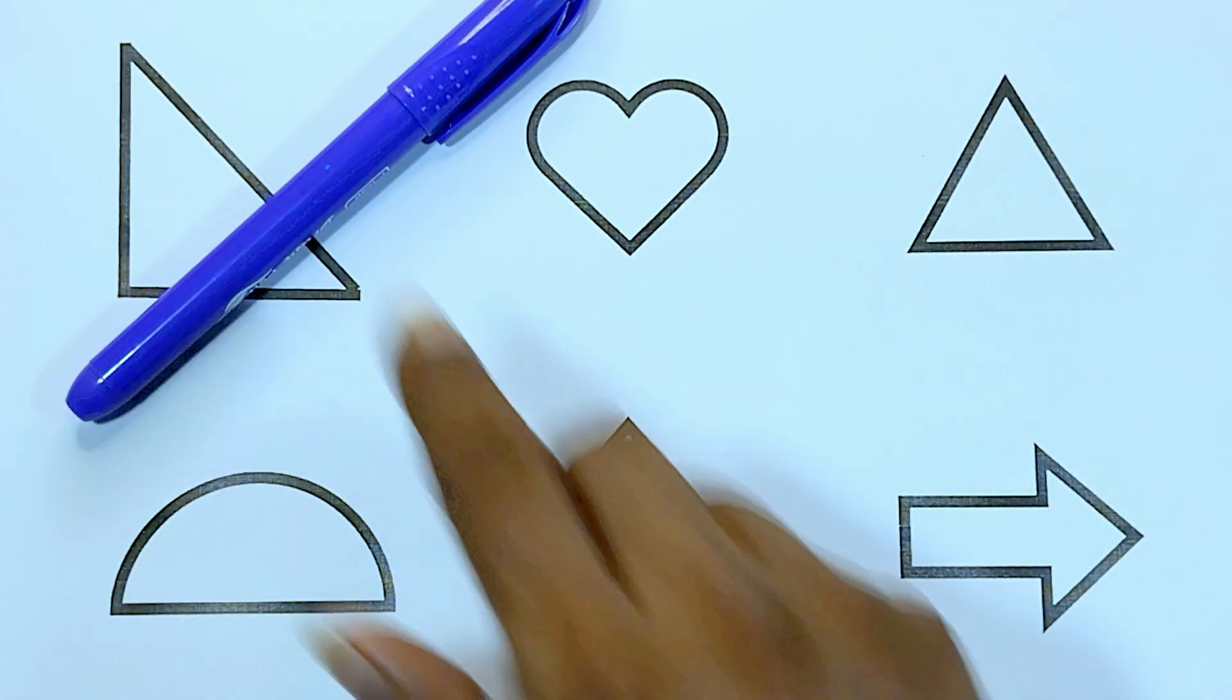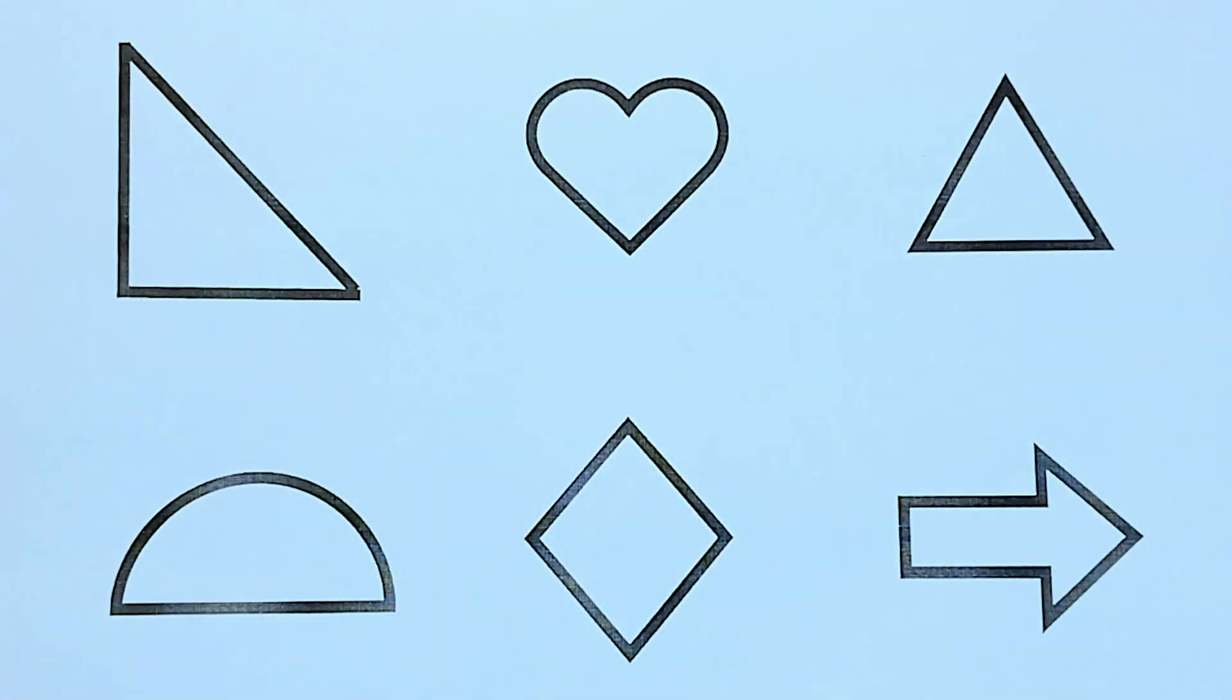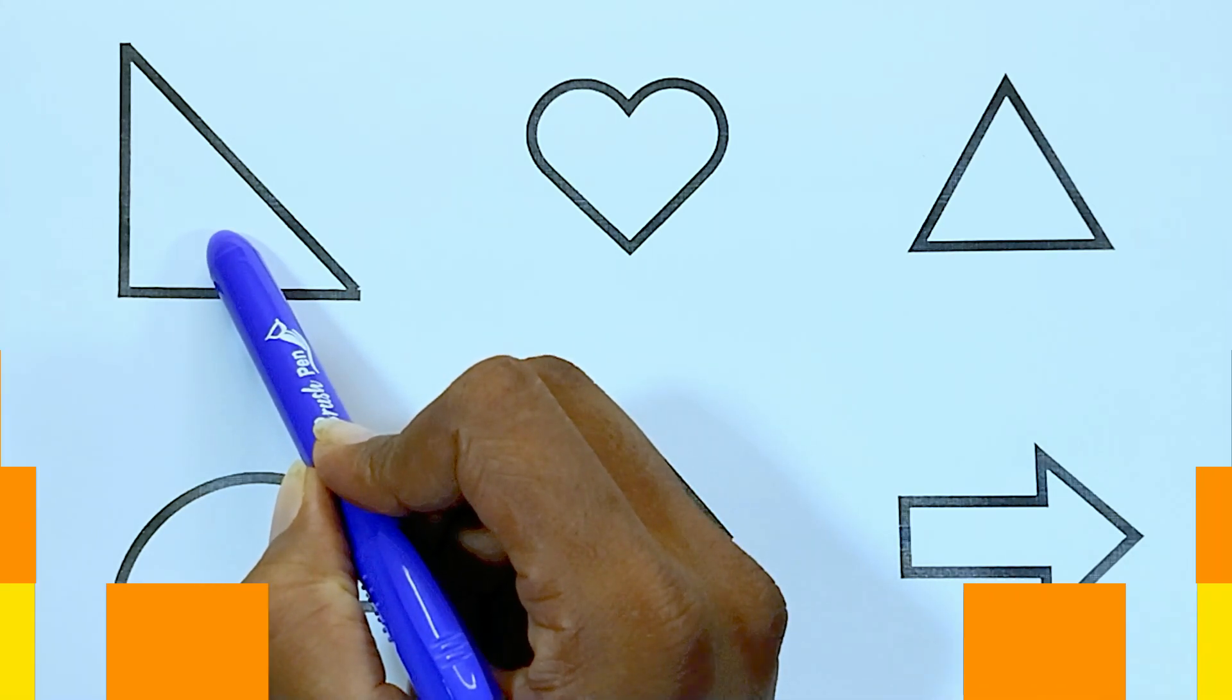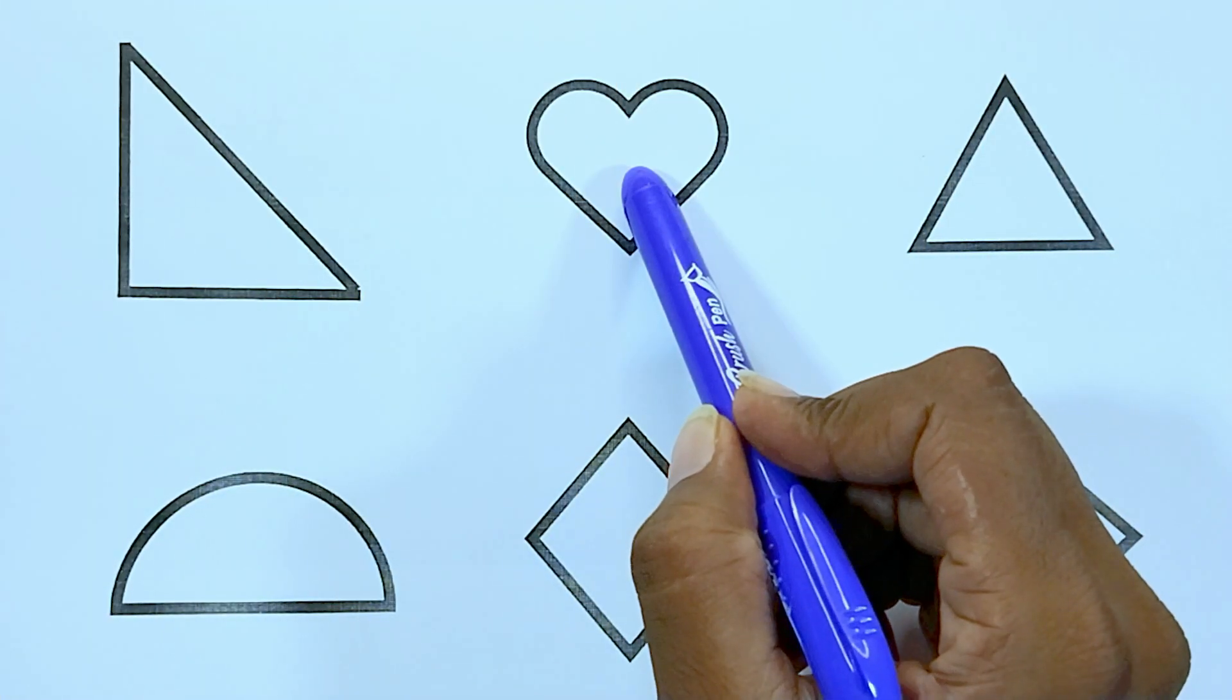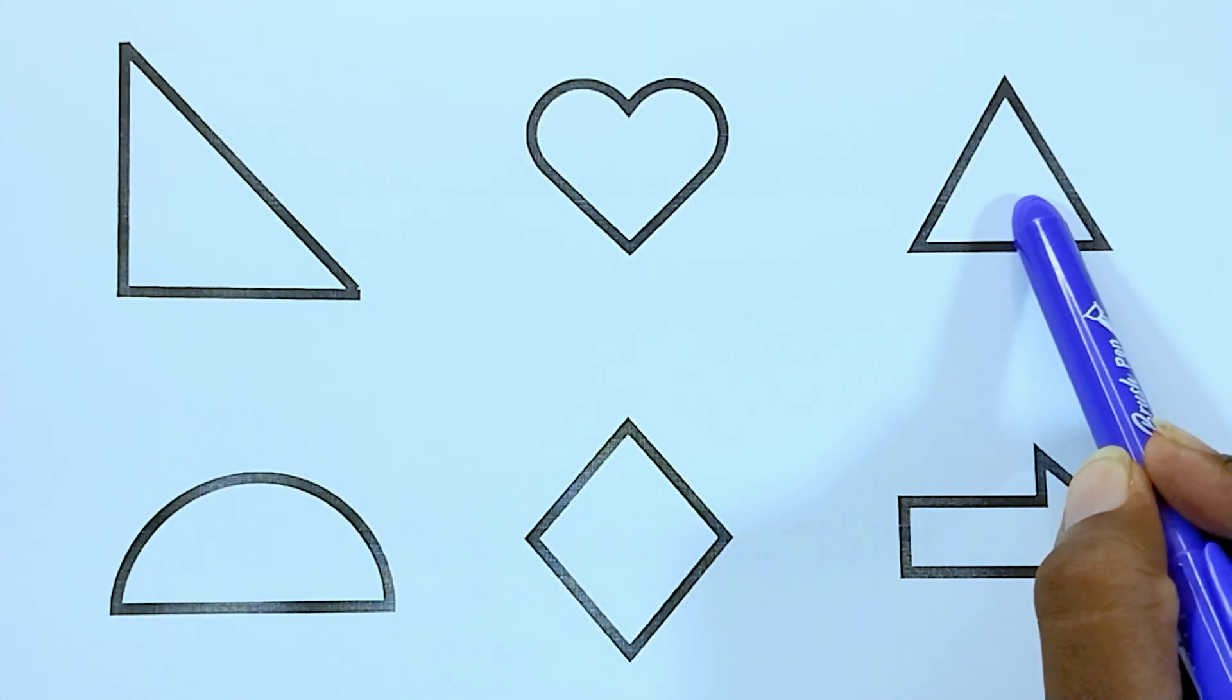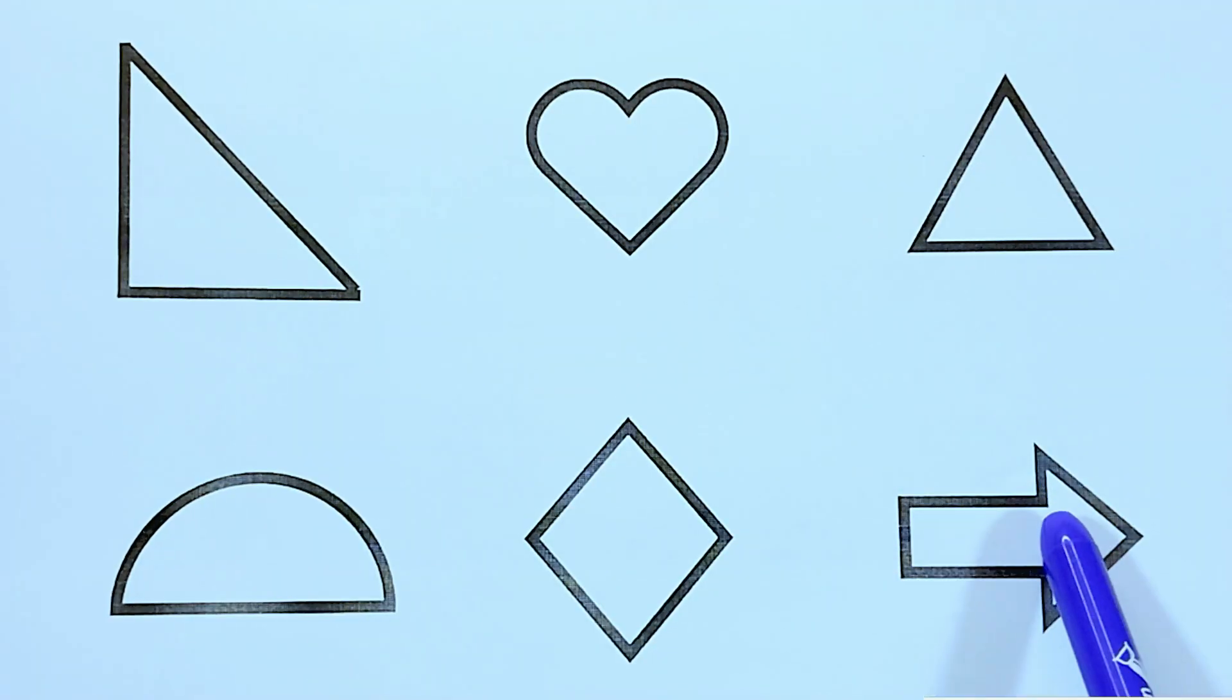And blue color. The shapes are right triangle, heart, triangle, semicircle, rhombus, and right arrow.